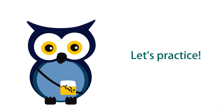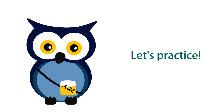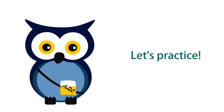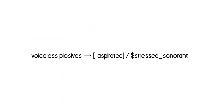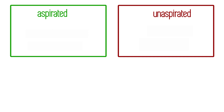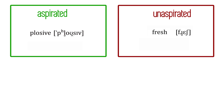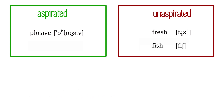Now I'm going to give you some words and I'd expect you to pronounce them accurately. You need to figure out, based on this rule, whether you need to aspirate or not. How about the word 'plosive'? What about 'fresh'? Or 'fish'? Note that /f/ becomes voiceless, but is there aspiration? We're talking about voiceless plosives — /f/ is a voiceless fricative, so it's not relevant, and neither is 'fish.' What about 'crime'?